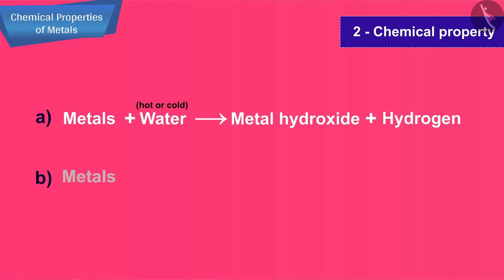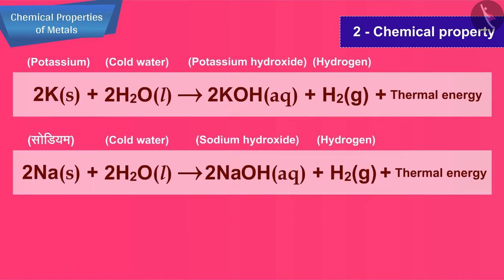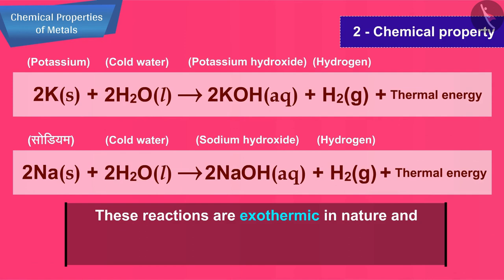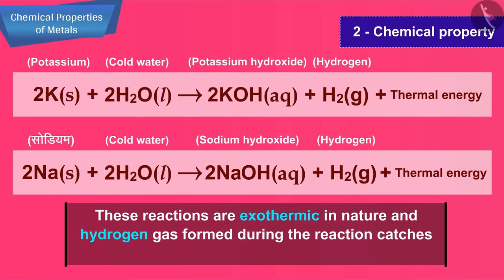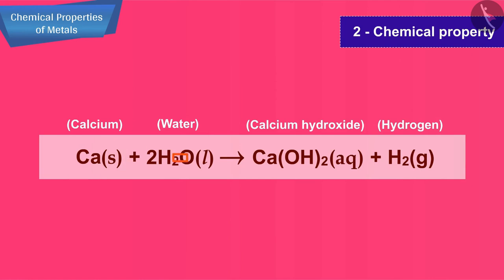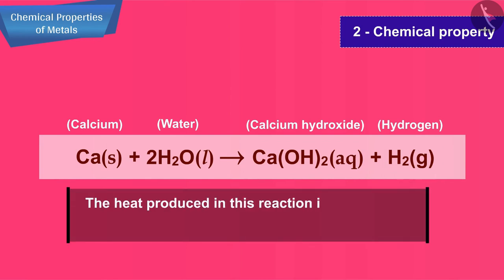When a metal reacts with steam, the products are metal oxide and hydrogen gas. Potassium and sodium react vigorously with cold water and these reactions are exothermic in nature. The hydrogen gas formed during the reaction catches fire and burns, causing little explosions. Calcium reacts with cold water to form calcium hydroxide and hydrogen gas.